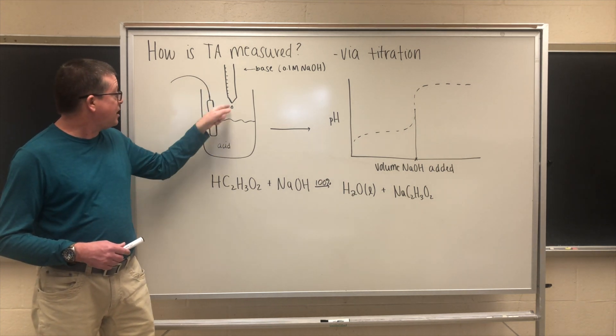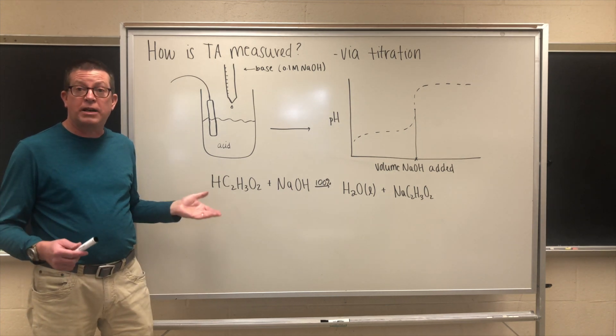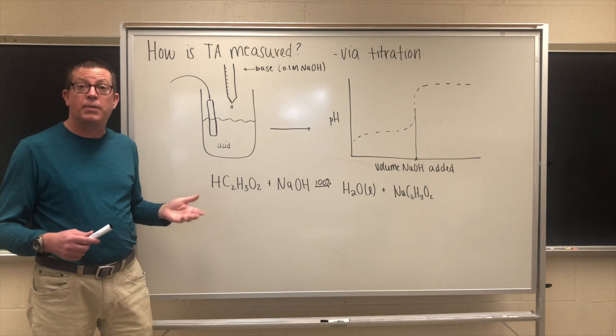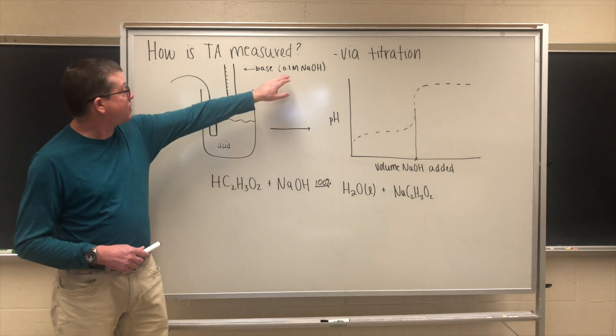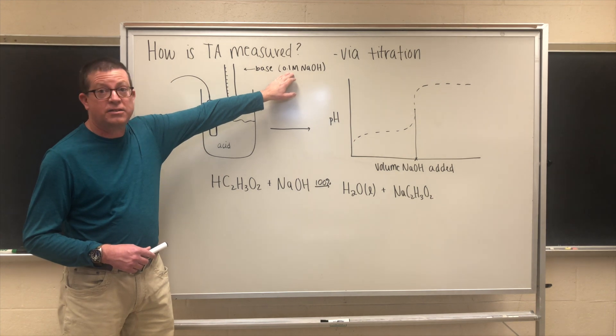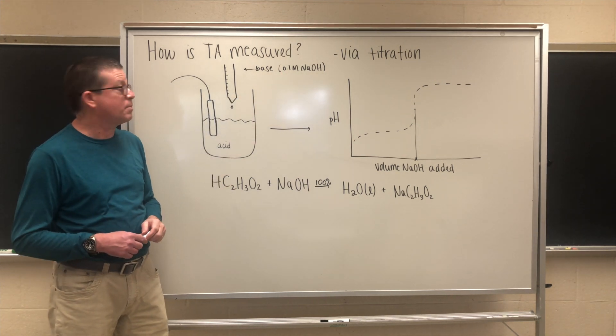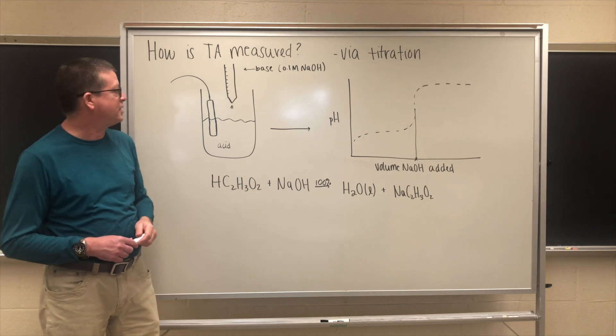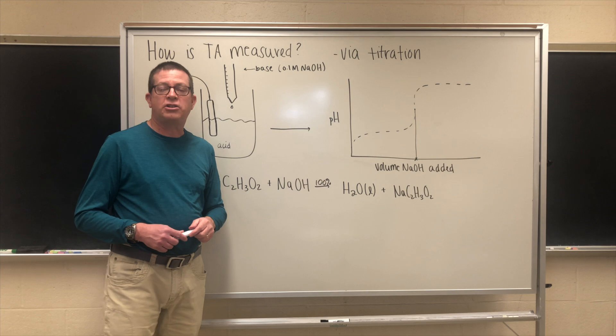The burette is calibrated and we can introduce the base drop by drop so that we can monitor the reaction. We have to know the concentration of the base that we're adding. In this case we might use a 0.1 molar solution of sodium hydroxide, which is a good strong base. As we do this, we're going to generate a pH titration plot.